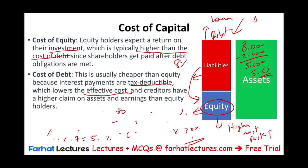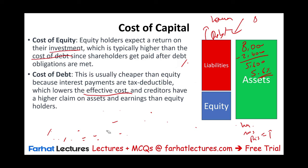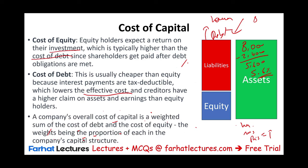The creditors have a higher claim on assets than equity holders, so you pay them less. If you're borrowing at 8%, your cost of equity might be 13% — definitely higher than 8%. A company's overall cost of capital is the weighted sum of the cost of debt and the cost of equity — that's the weighted average cost of capital, or WACC, where the weights are the proportion of each in the capital structure.